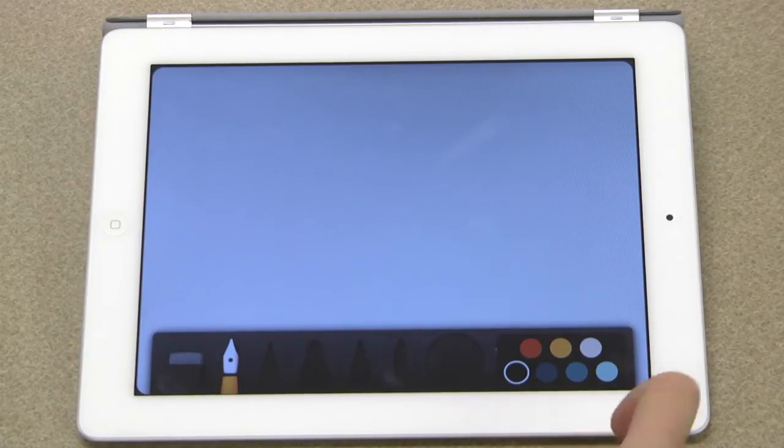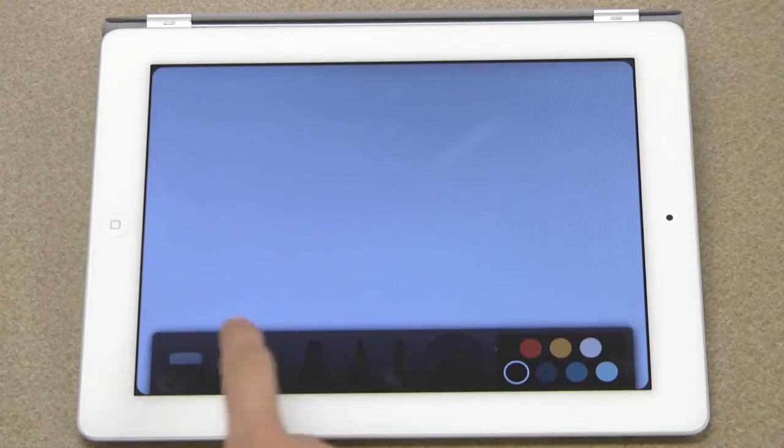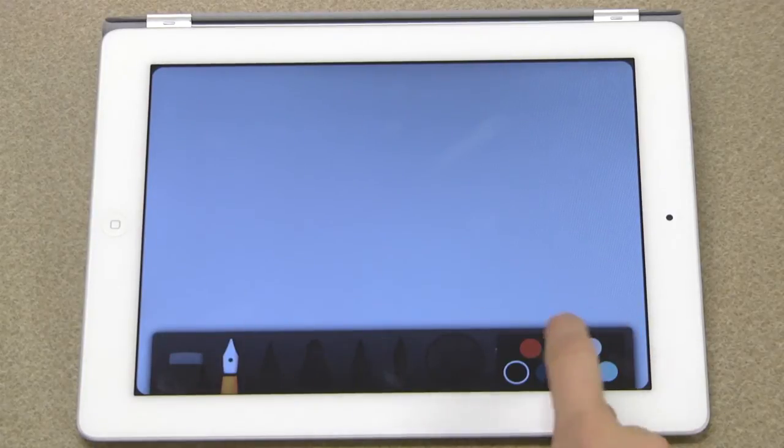To write, you can just use your finger or a stylus and tap the tool you want to use. You can also choose the color.